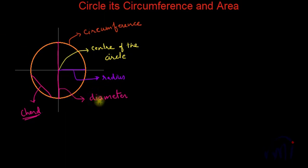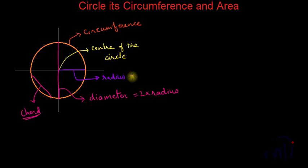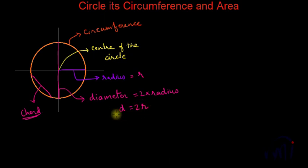What is so special about this diameter? The diameter is the longest chord of the circle, and at the same time it is equal to 2 times the radius. So if radius is called r, then diameter, represented as d, will be 2 times the radius — that is, d = 2r.